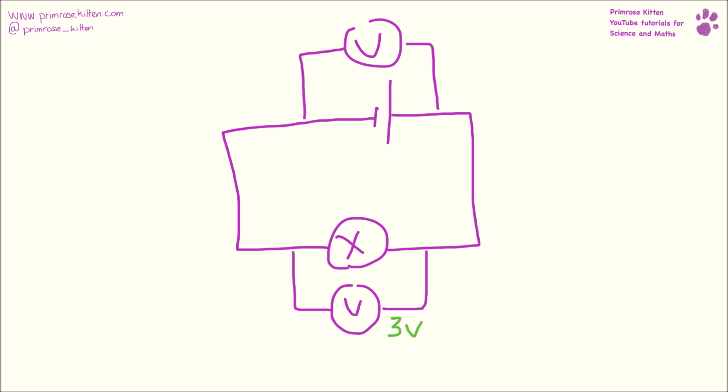When we are looking at series circuits, we know that whatever the total voltage in the circuit is has to be the voltage across the battery. So here across our bulb we have a potential difference of three volts, which means across the cell we must also have three volts.